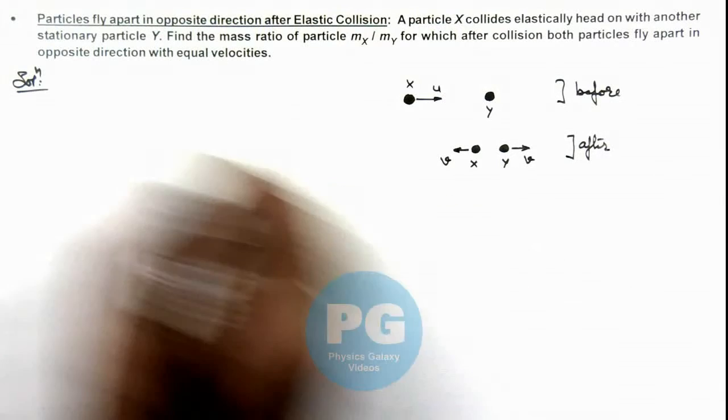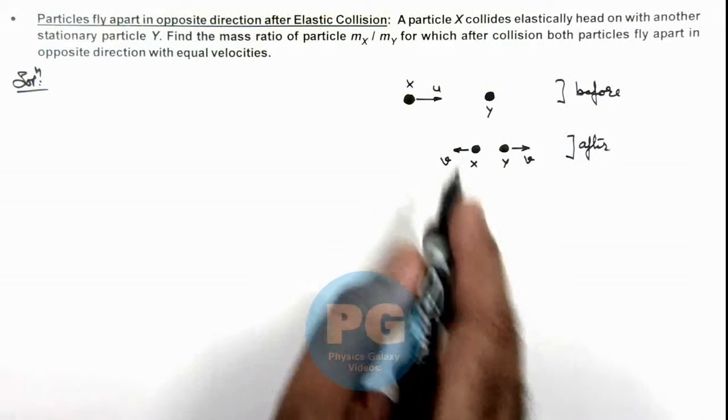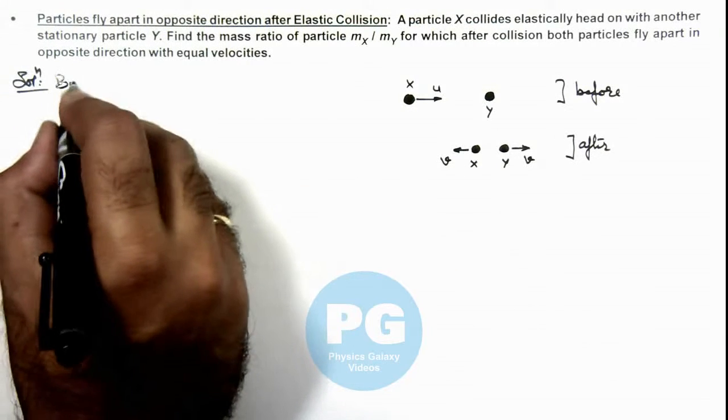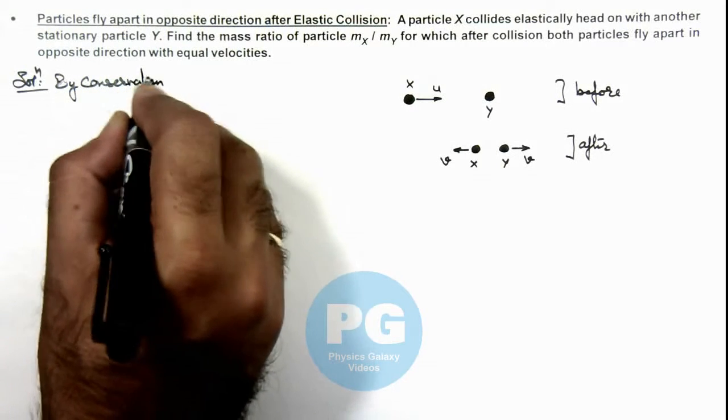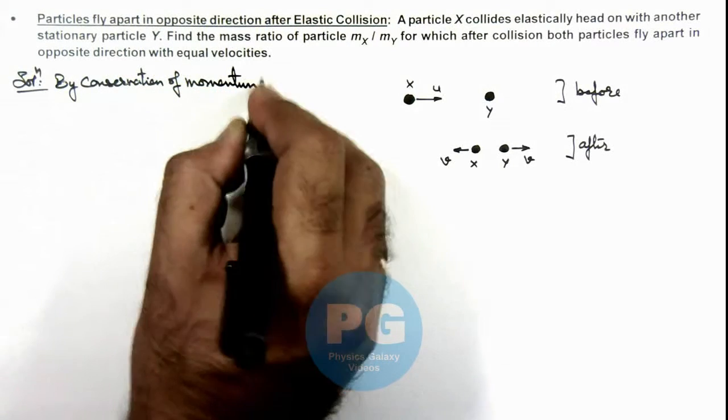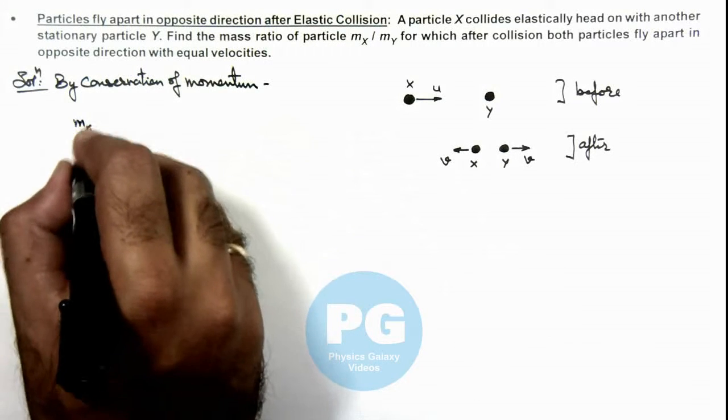So here we can see as it is given that the collision is elastic we can conserve linear momentum and energy. So here we can write, by conservation of momentum, here we can write initial momentum was mx u.